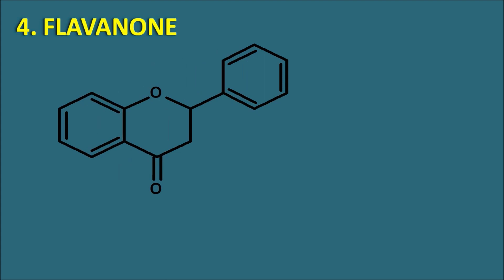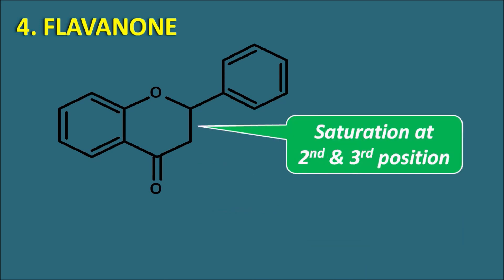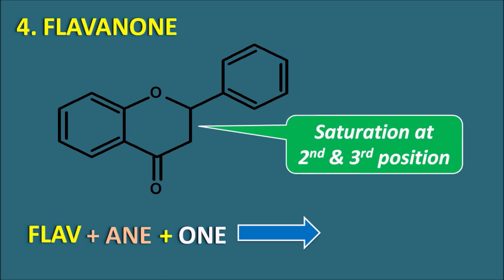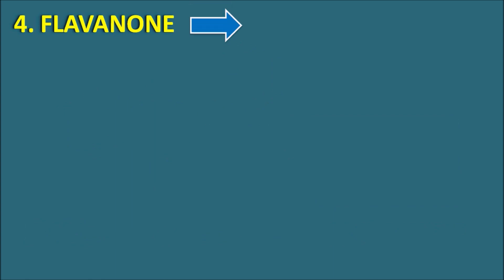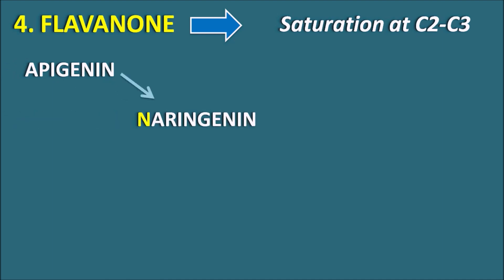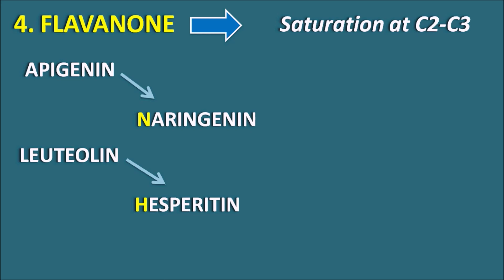The next type is flavanones. Flavanones again have a ketone group, but the modification is saturation at the second and third position. The name is flav + 'an' (indicating saturation) + 'one' (for ketone), giving flavanone. We can relate them to flavones: apigenin when saturated becomes naringenin, and luteolin when saturated becomes hesperetin. Naringenin and hesperetin are the two important flavanones acting as aglycones in various glycosides.